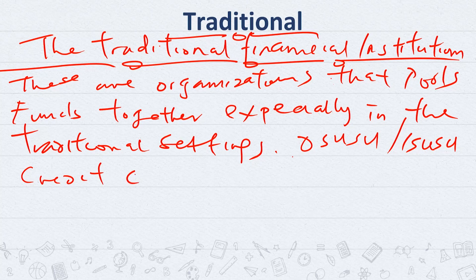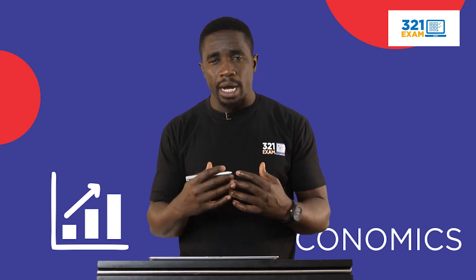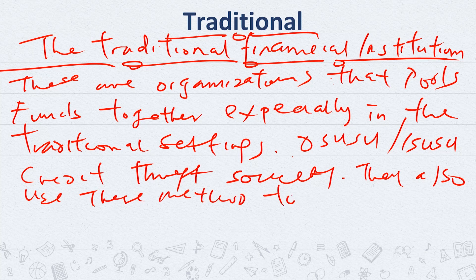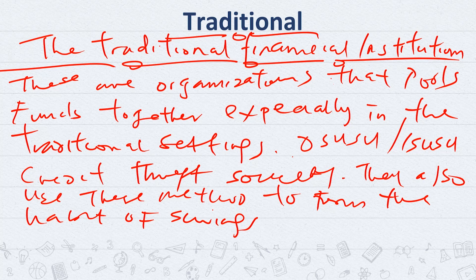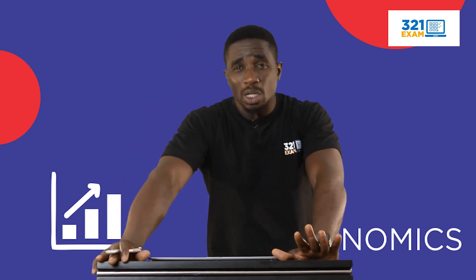Traditional financial institutions can exist as the Credit Thrift Society. The Credit Thrift Society pools funds together — they form like a cooperative — and in most cases, the funds are given to members of the society without collateral security. They also use this method to form the habit of savings. The Osusu pools funds together, saves them, and gives the money to members without collateral security.